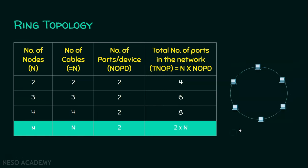The generic formula is: if there are n nodes, then we need n cables. Each node must have two ports, therefore the total number of ports in the network is equal to two into n. The total number of ports equals the number of nodes multiplied by the number of ports per device. As far as ring topology is concerned, the number of ports per device will always be two, so two times n gives you the total number of ports.